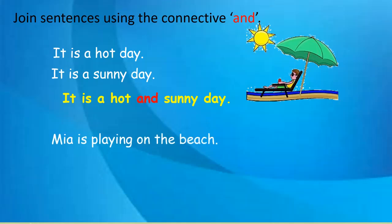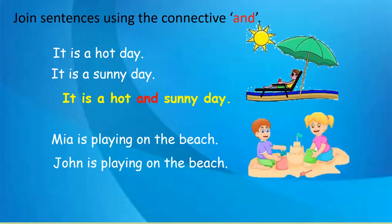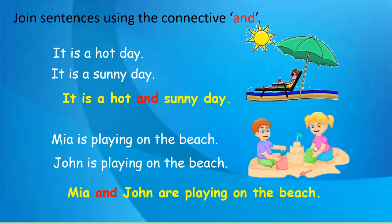Next exercise: 'Mia is playing on the beach.' 'John is playing on the beach.' Can you put these two sentences together? Did you write it like this: 'Mia and John are playing on the beach'? The common element was 'on the beach', and there are two persons, so we use 'are' — because for plural nouns we use 'are'. Mia and John are playing on the beach.